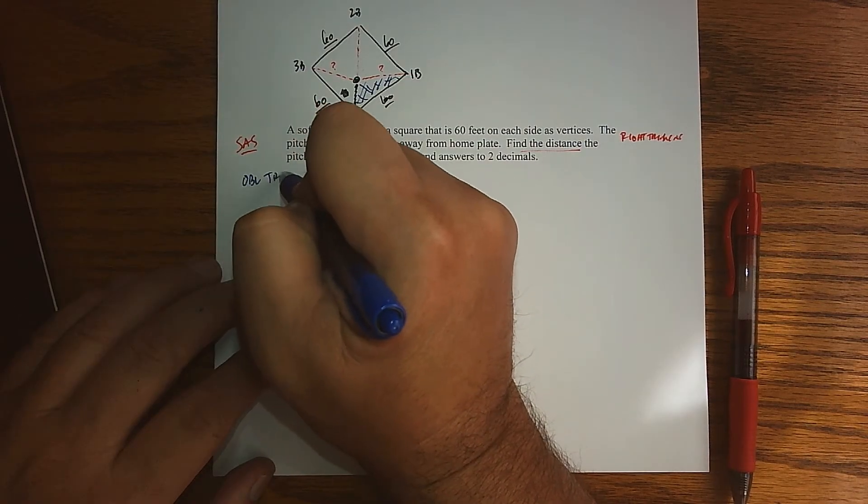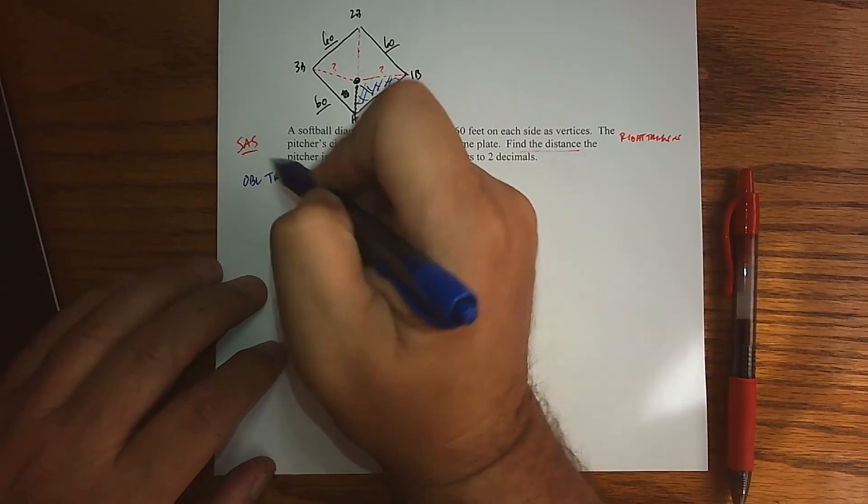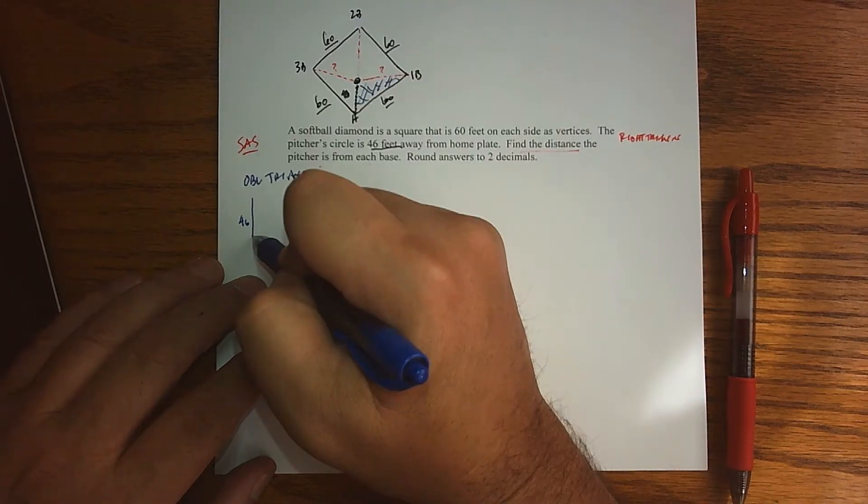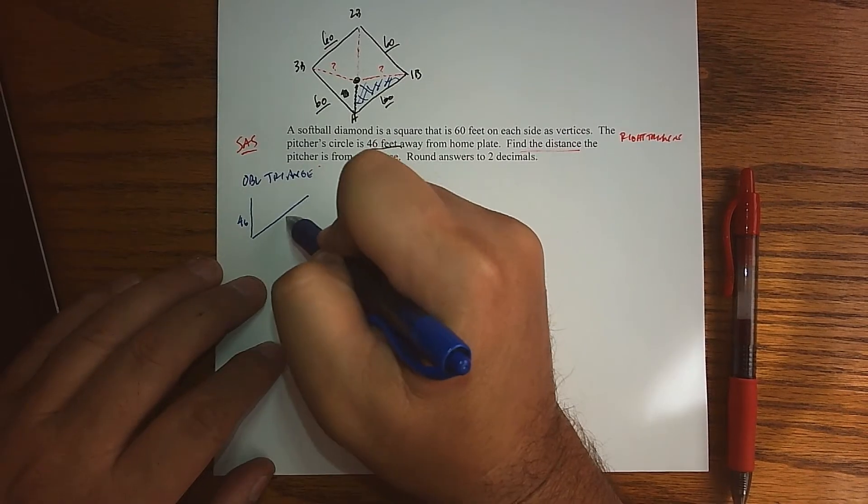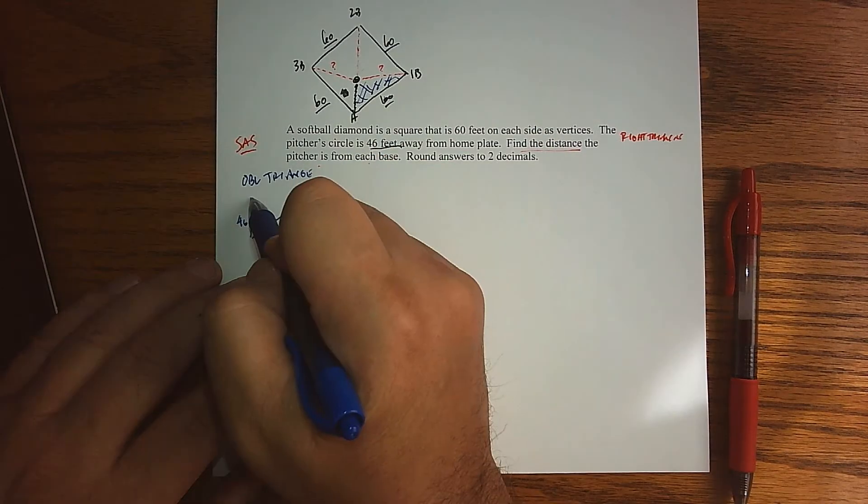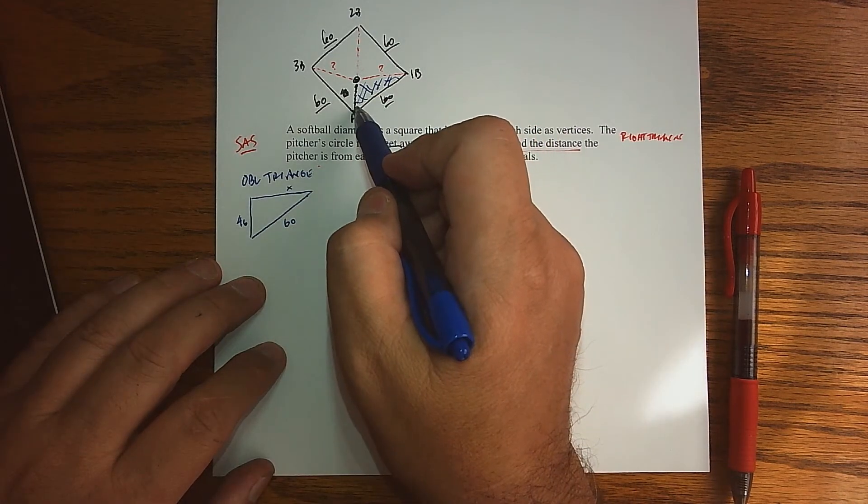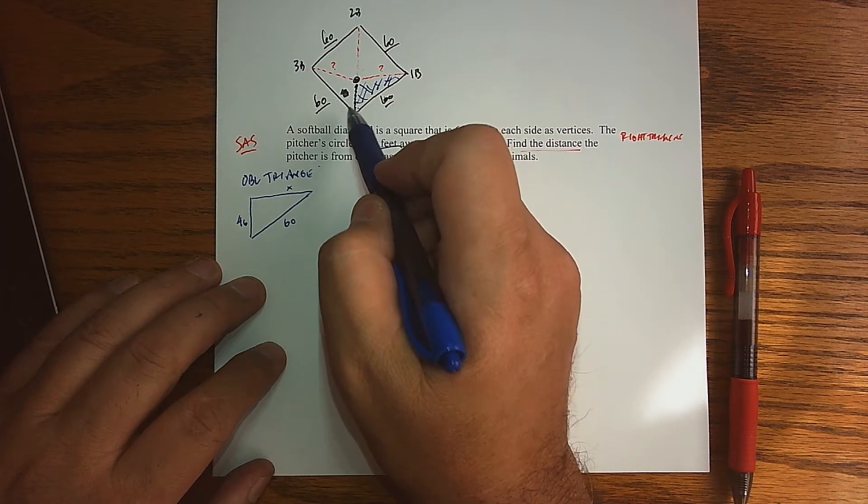When I consider that oblique triangle, when I resketch it, this is 46 feet, we know this piece right there is 60, and here's the piece that we're trying to find. Let me call it x for the moment.